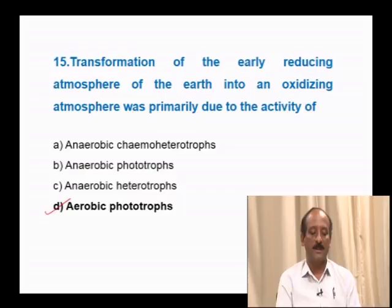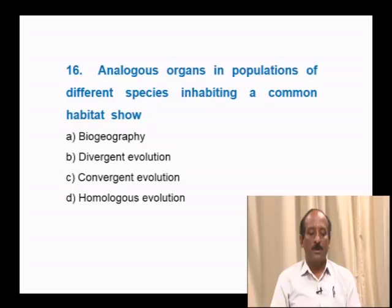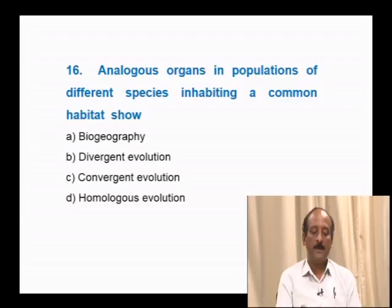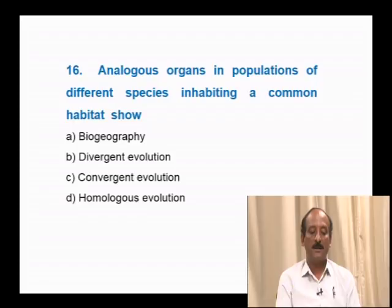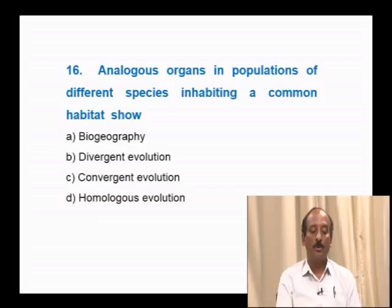Question number 16: Analogous organs in populations of different species inhabiting a common habitat show — biogeography, divergent evolution, convergent evolution, homologous evolution. Analogous organs explain convergent evolution, where different organs evolve to perform a common function. Hence, the correct answer is convergent evolution, option C.